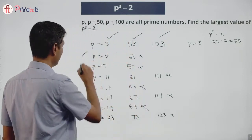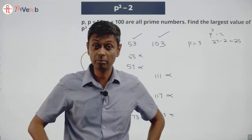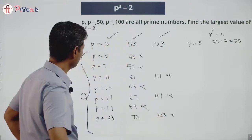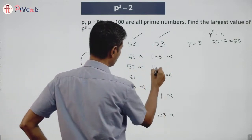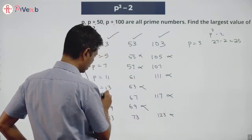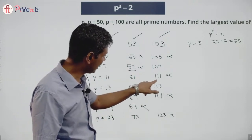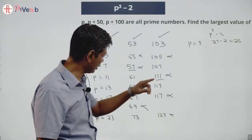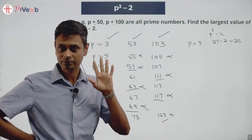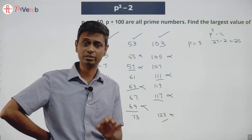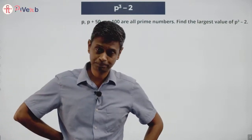Now I am already thinking maybe there are not too many values. Maybe, just maybe, there is no other value. So p equal to 3 is the only possibility where all three are prime. Now I am going to prove that. Let me see a pattern. p=5: 5, 55, 105 — not prime. p=7: 7, 57, 107 — not prime. p=11: 11, 61, 111 — not prime. p=13: 13, 63, 113 — not prime. Why are these numbers not prime? 57 is 3 times 19. 111 is again 3 times something. 63 is 3 times something. 117 is 3 times something. 69 is a multiple of 3. 123 is a multiple of 3. A multiple of 3 is sitting here somewhere. I am going to see if I can extrapolate this. I am going to reframe this question: out of p, p plus 50, p plus 100, somewhere there has to be a multiple of 3 sitting. That is my hypothesis.